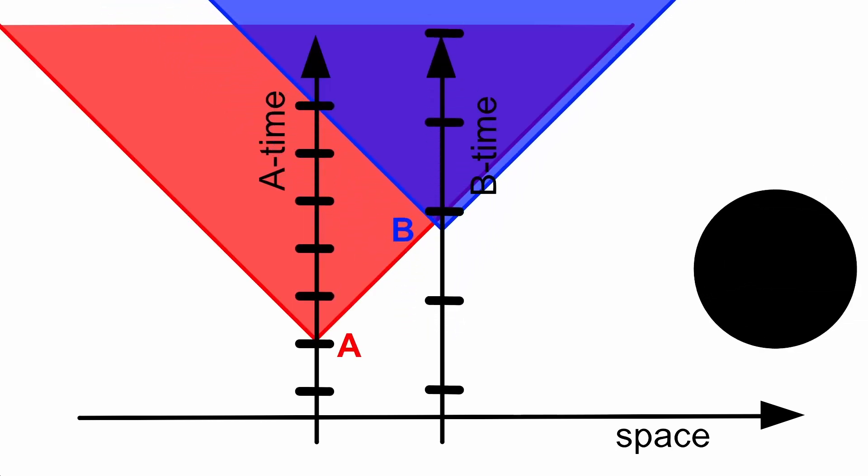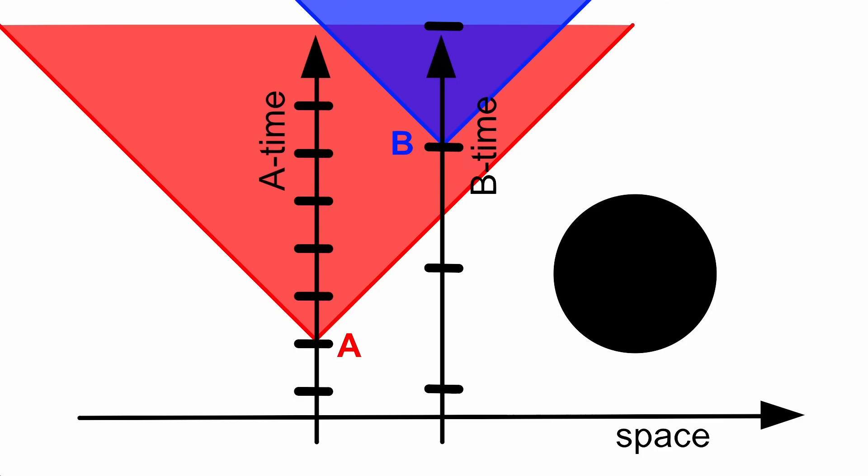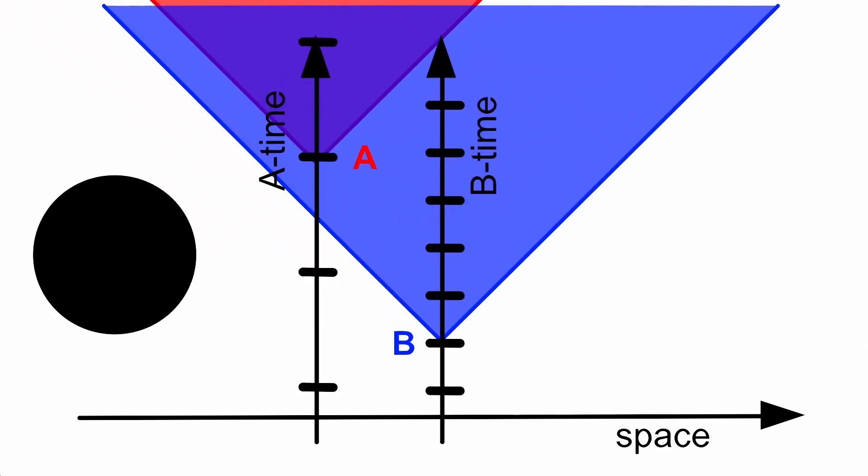If I put a black hole on the right, then A can now influence B, because time runs so slow at B. If I put the black hole on the left, then B can influence A. Alright, you might say, so what?